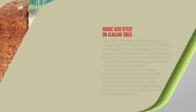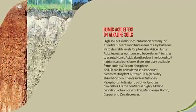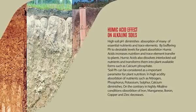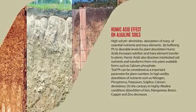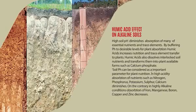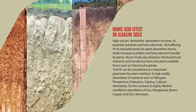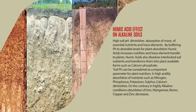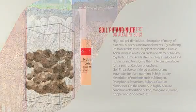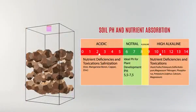Humic acid effects on alkaline soils: A high soil pH diminishes absorption of many essential nutrients and trace elements. By buffering pH to desirable levels for plant absorption, humic acid increases nutrition and trace element transfer to plants. Humic acid also dissolves interlock soil nutrients and transforms them into plant available forms such as calcium phosphate. Soil pH can be considered an important parameter for plant nutrition.